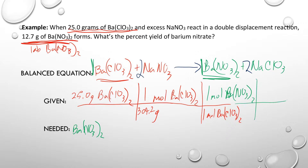Now we've got to get out of moles and into grams using the periodic table again. One mole of barium nitrate: nitrogen is 14 times 2 is 28, oxygen is 16 times 6 is 96, and barium is 137 — giving us 261.3 grams per mole. Multiplying 25 times 261.3 and dividing by 304.2, you expect 21.4 grams of barium nitrate.